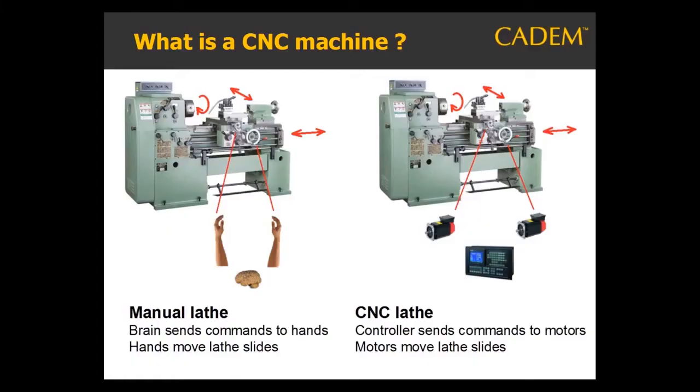In this lecture, I will be introducing you to CNC machines. We will look at a few types of CNC machines for metal cutting and metal forming. The first thing to understand about a CNC machine is that it is the same as a manual machine in terms of operations, cutting tools, and work holding.